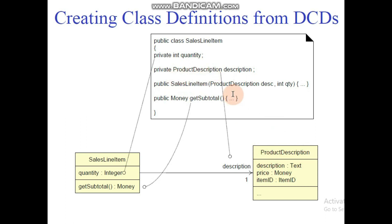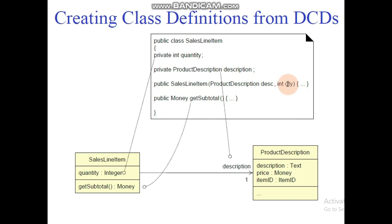Similarly, we have created the ProductDescription class. We have created the description and passed two parameters in SalesLineItem: one is product description — written as desc — and int quantity. We have to declare int qty as a variable. One is a class object and here we pass the int variable. These parameters are passed and certain statements are added within this function.